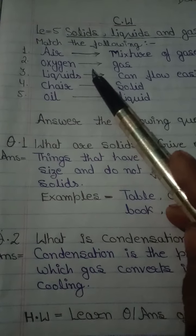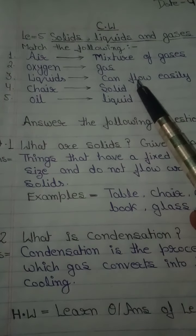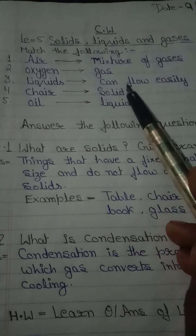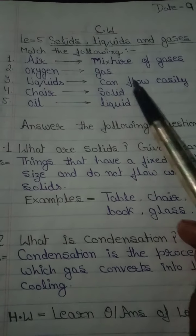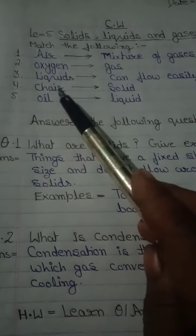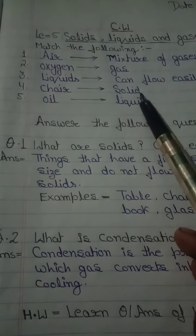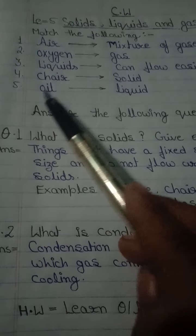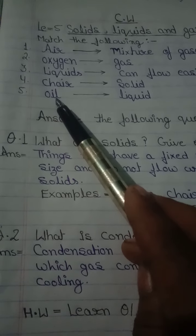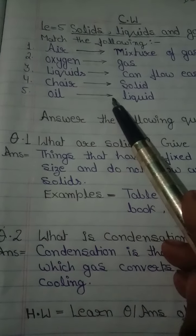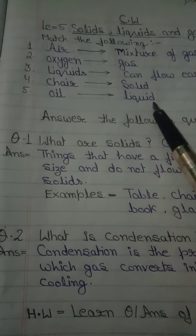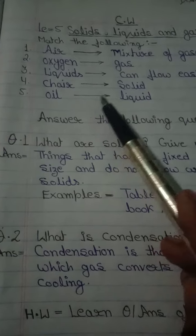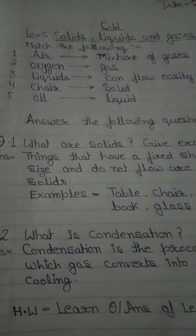Third is liquids. Liquids can flow easily. You know water is an example of liquid, and water can flow easily. Next, chair is solid — chair is an example of solid. Fifth is oil. Oil is an example of liquid. Why? Because oil can flow easily.